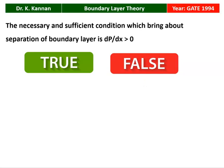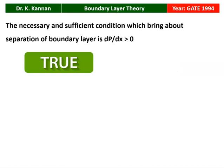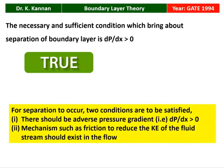The next question from the 1994 question paper: The necessary and sufficient condition which brings about the separation of a boundary layer is dP/dx greater than 0. The answer is true. Boundary layer separation will happen only when dP/dx is greater than 0. For separation to occur, two conditions must be satisfied: there should be an adverse pressure gradient (dP/dx > 0), and a mechanism such as friction must exist to reduce the kinetic energy of the fluid stream.